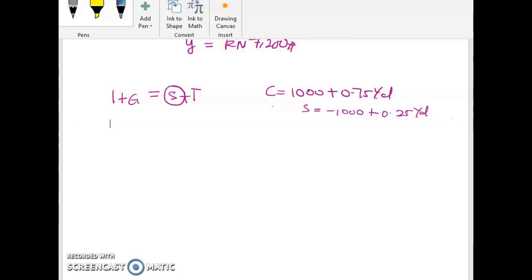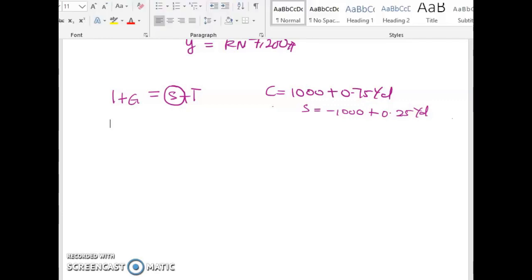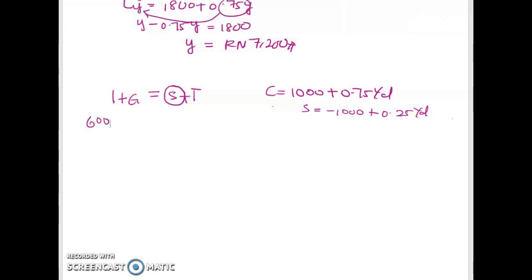I plus G. 600 plus 500 equal to... Don't forget Y minus T which is 400 and plus T 400.